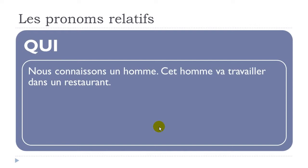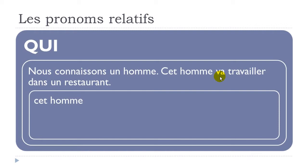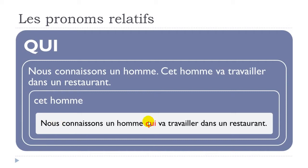A third example: 'nous connaissons un homme' and 'cet homme va travailler dans un restaurant'. That's the futur proche. We don't want to repeat 'cet homme' or 'un homme', so we get: 'nous connaissons un homme qui va travailler dans un restaurant' — 'qui' placed just before the verb.